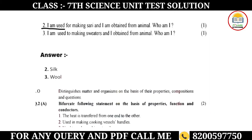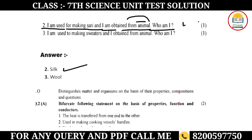Question number two: 'I am used for making sari and I am obtained from animals — who am I?' I am used for sari and I am obtained from animals. My name is silk. They are silk — we have silk from animals.